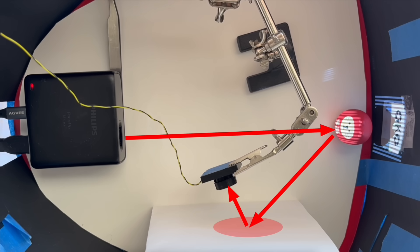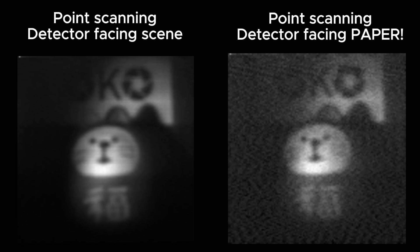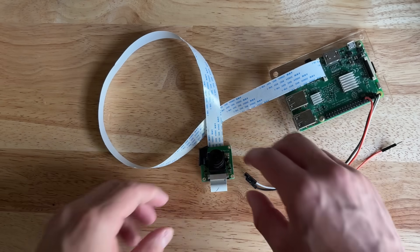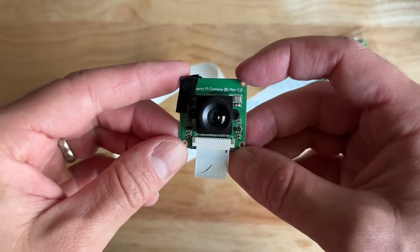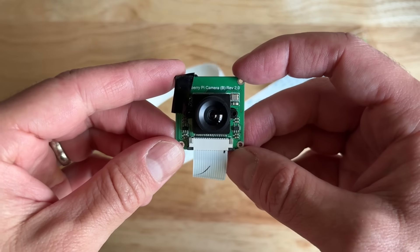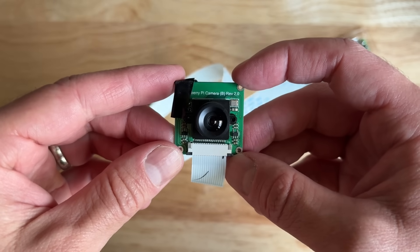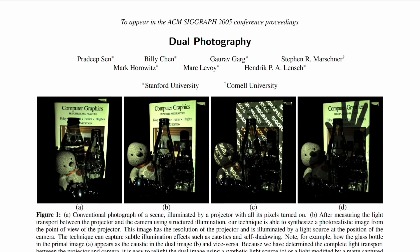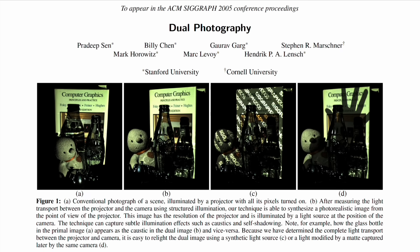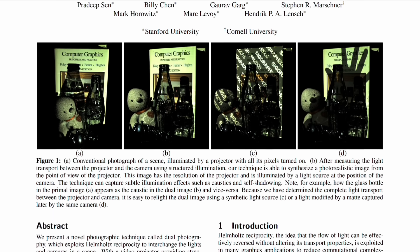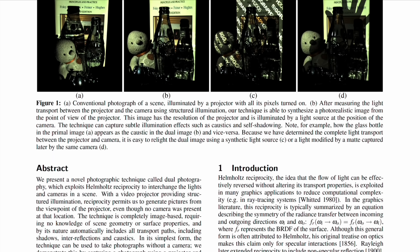In my last video I showed how to reconstruct images of objects that were out of sight from a single photo detector. It's time to switch out that single pixel detector for a 2D camera. I'll be using this Raspberry Pi camera. The first part of this video will be based on some more results from the dual photography paper I described last time, and then I'll go into range finding.